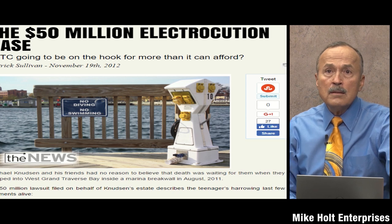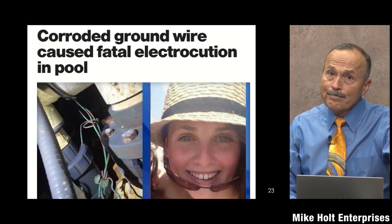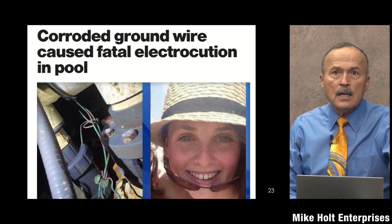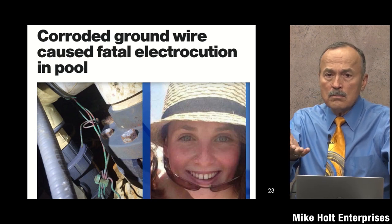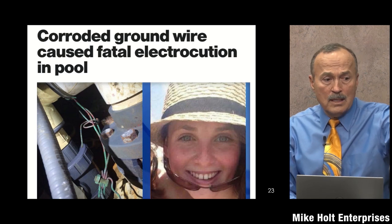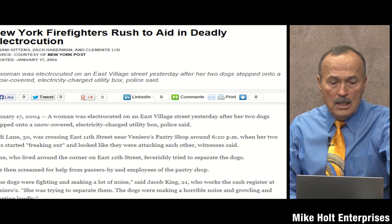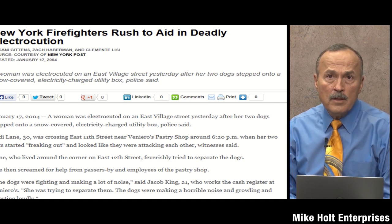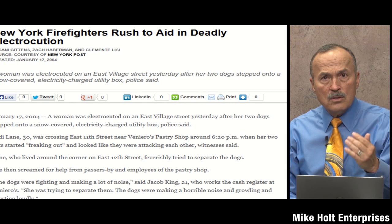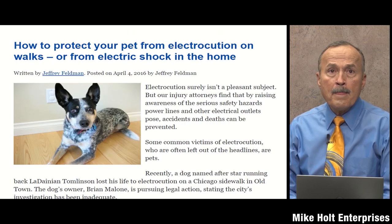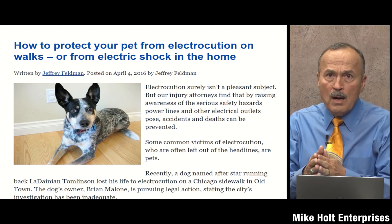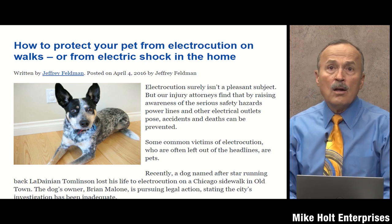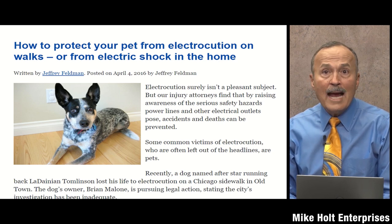There was a $50 million electrocution case in Raleigh, North Carolina at a marina. In New York City, Jody Lane was walking her two dogs and was killed by stray voltage. The NEC is concerned about protecting persons and property — which includes animals like dogs, cats, and livestock. Chapter 5, Article 547 contains rules for agricultural buildings.